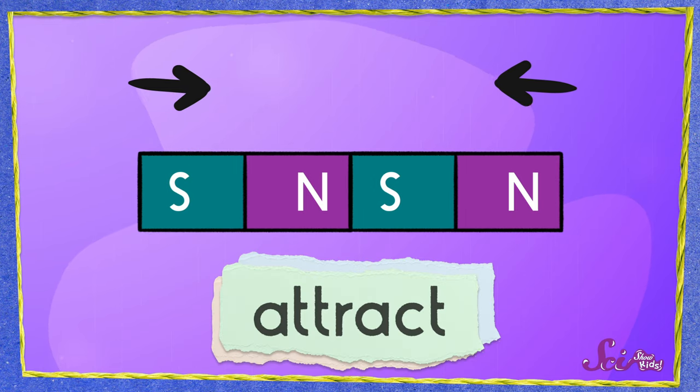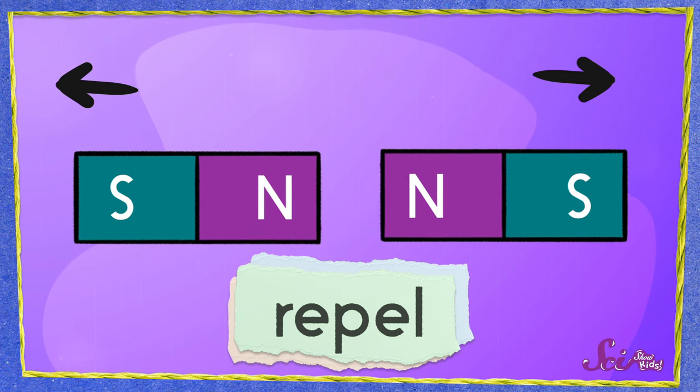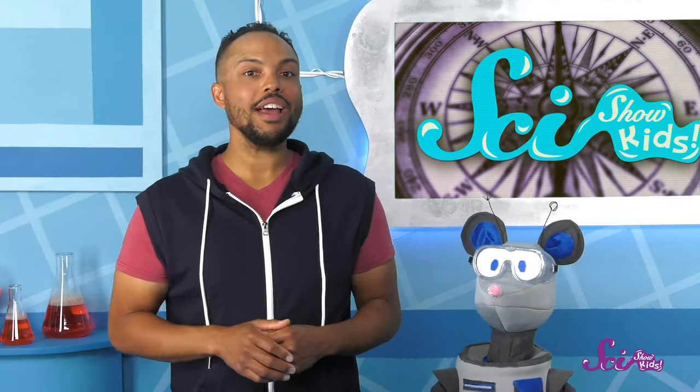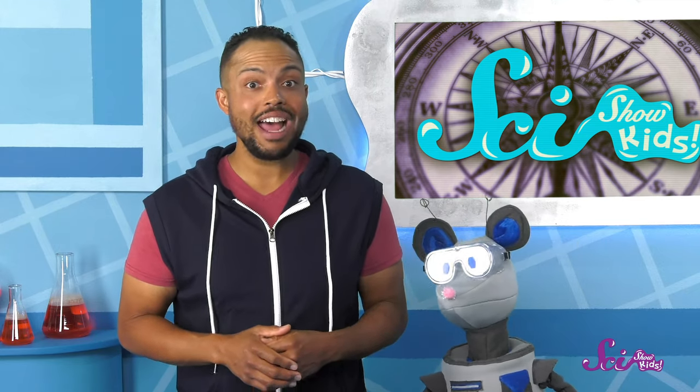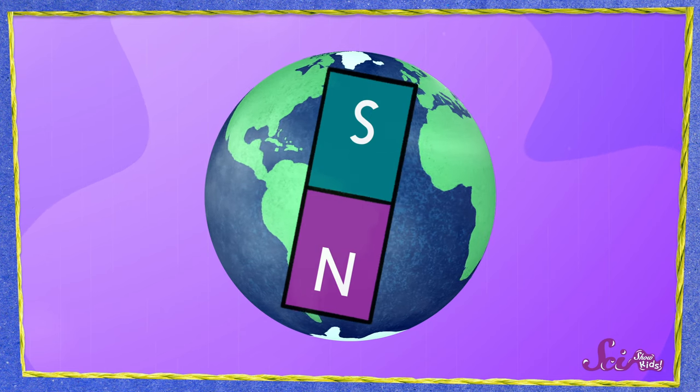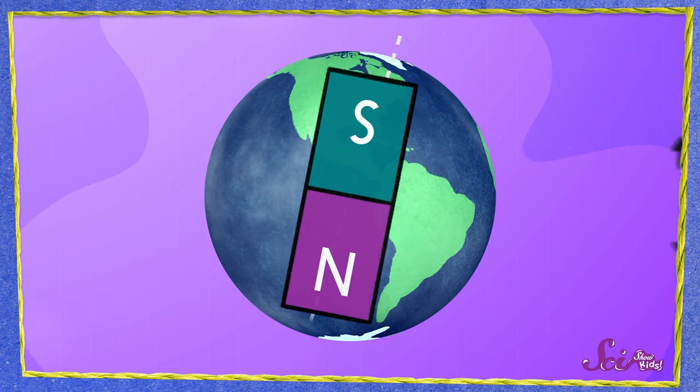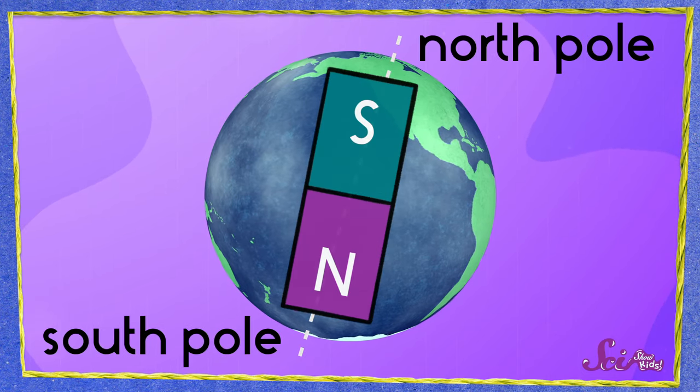And opposite poles of two different magnets attract. That means they pull on each other. Meanwhile, similar poles repel each other. Repel means push away. Now, here's the really awesome part. Our planet Earth is basically one huge magnet. So it also has magnetic poles. That means the Earth's poles act the same way that a magnet's poles do. They attract and repel the poles of other magnets. And they just so happen to line up pretty well with the parts of the planet we call the north and south pole.